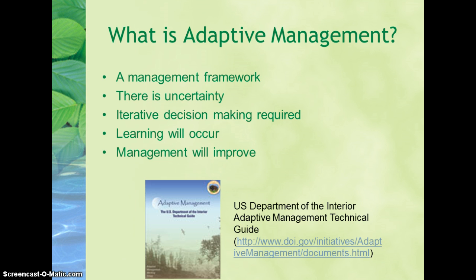Our working definition will be that adaptive management is a management framework within which there is uncertainty about the consequences of management actions. The issue under management requires iterative decision-making, and learning will occur through the process of the management actions. Over time, management will improve based on the learning that occurs. Adaptive management is a systematic approach for improving resource management by learning from management outcomes.